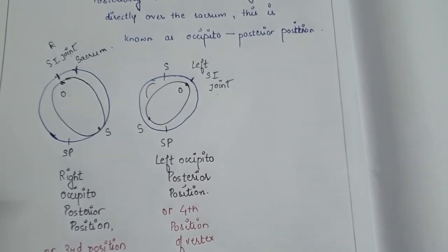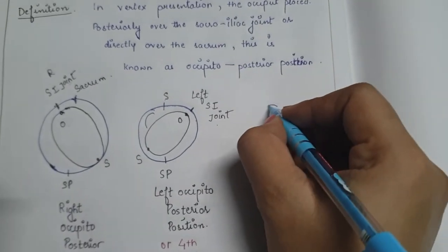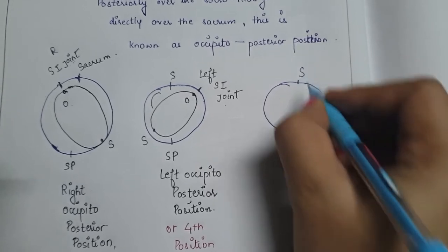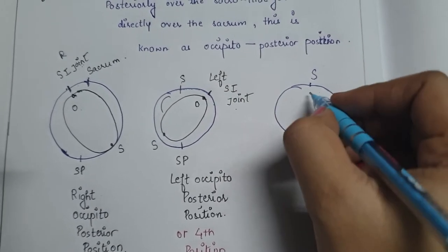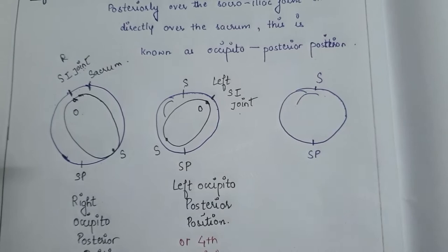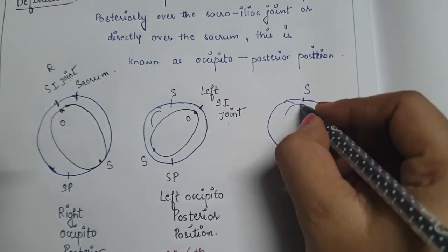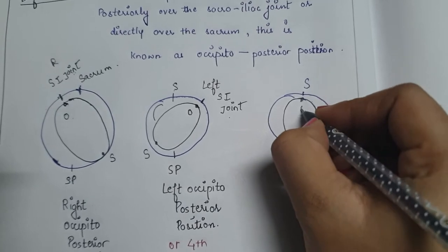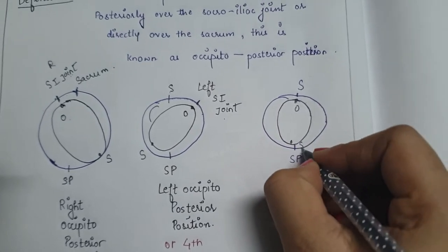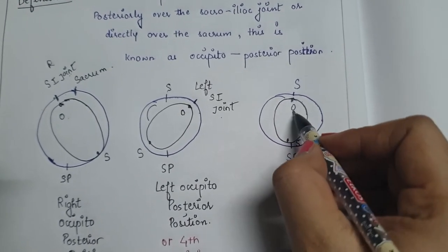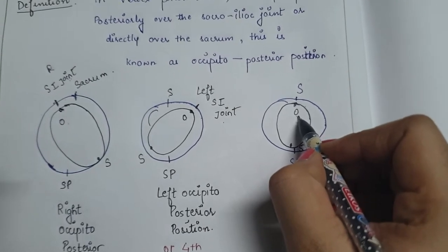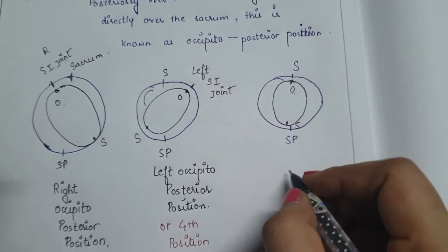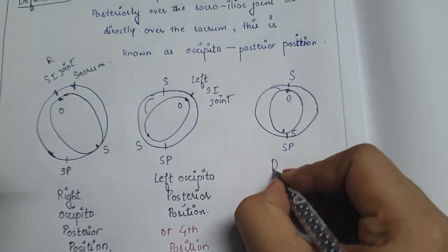The last one: here is the sacrum, symphysis pubis, occiput, and sinciput. When the occiput directly lies over the sacrum, that position is known as direct occipitoposterior position.